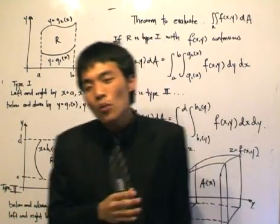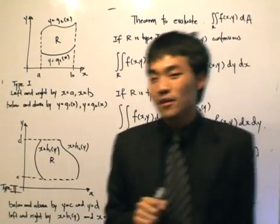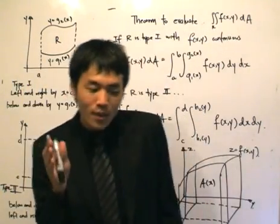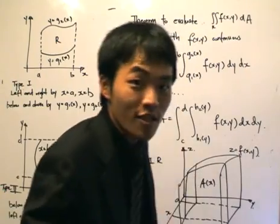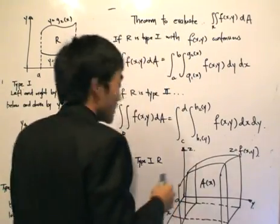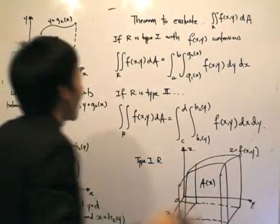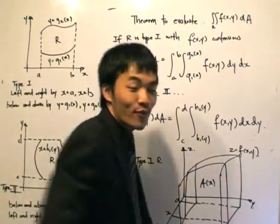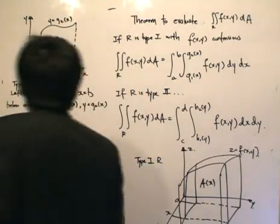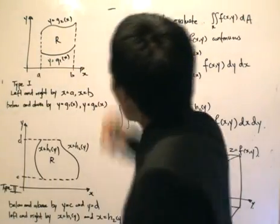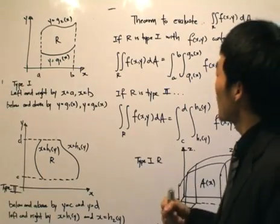So our region R is going to be broken down into two categories. We're just focusing our study on the region R — basically the double integral of f, the function over R. So what are the two types of region R that we would define?